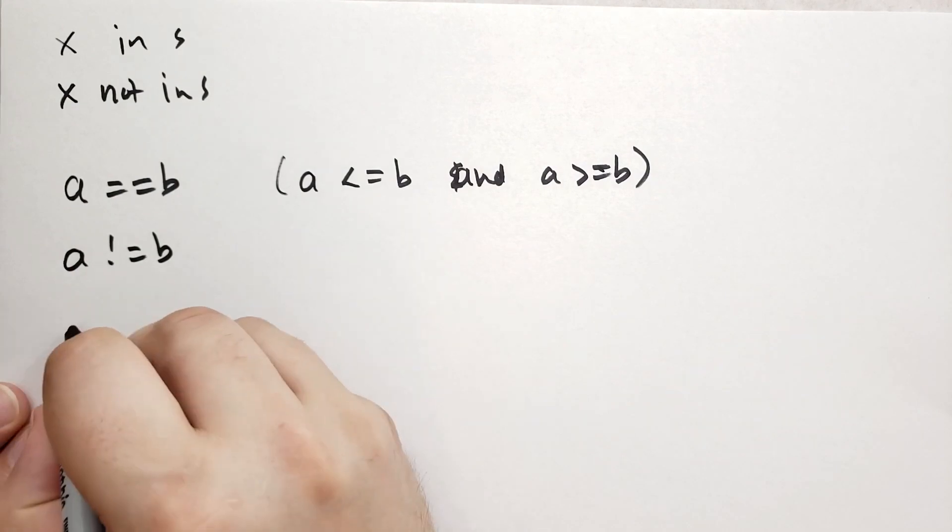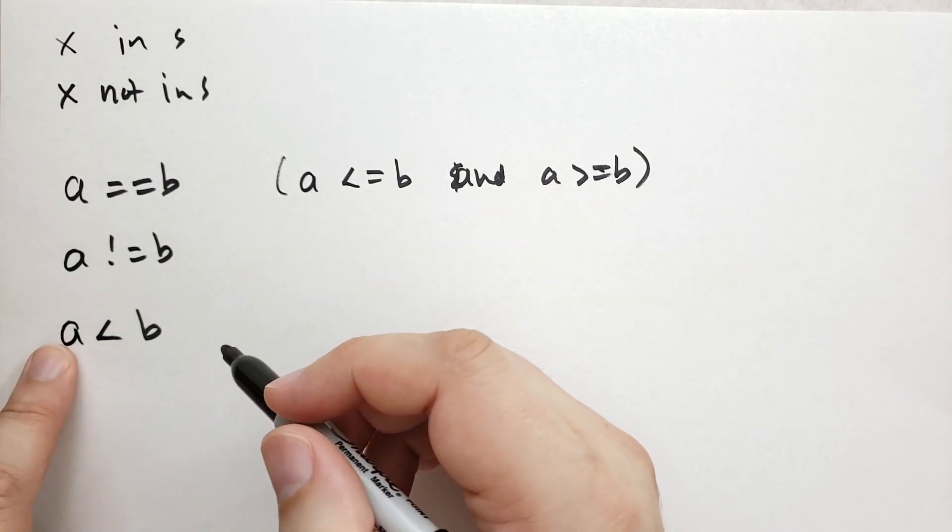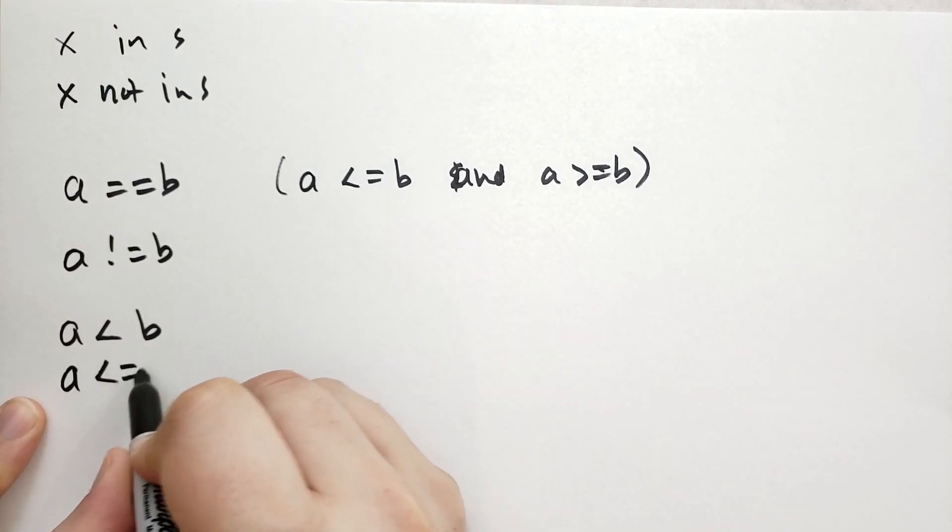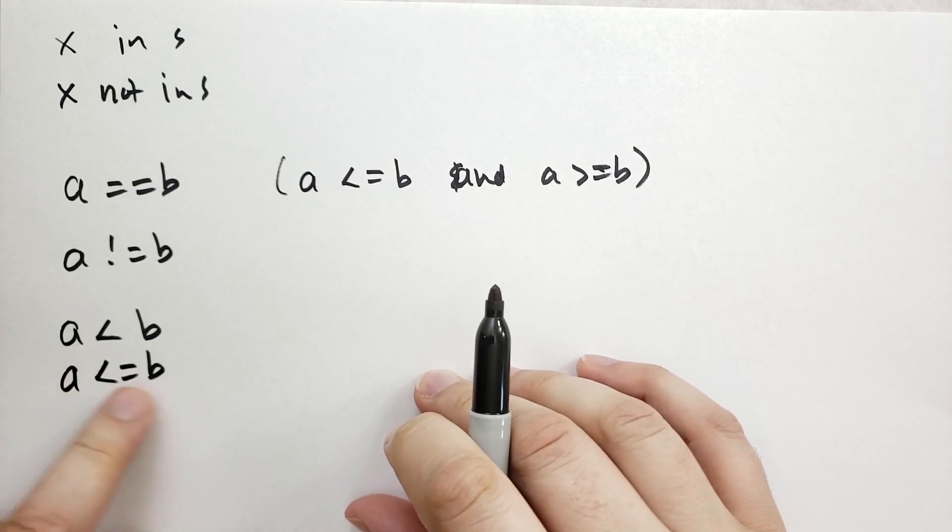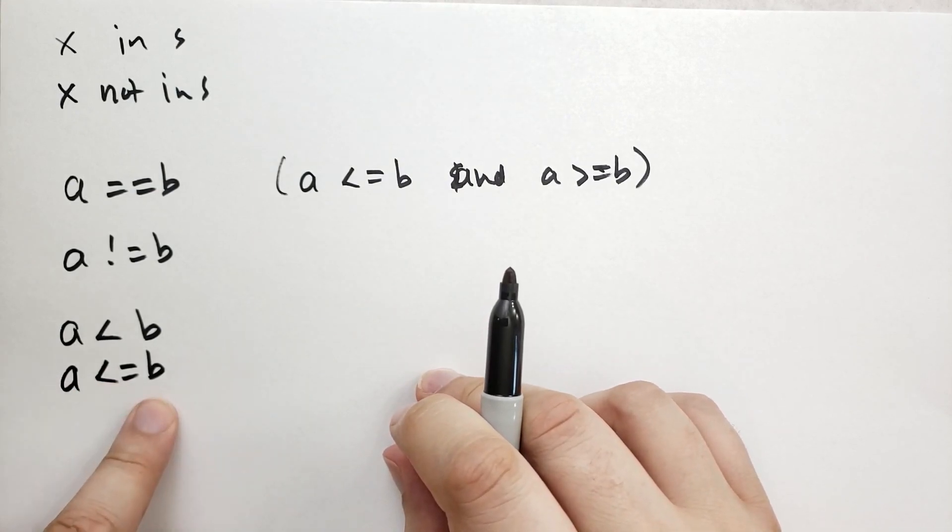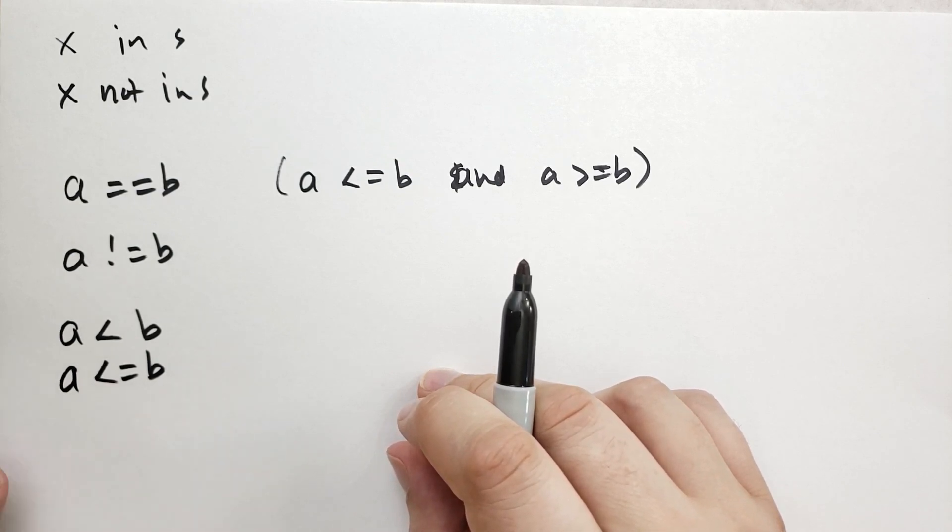And you have of course comparators in sets. So this is the strictly subset where all the elements are found in b but b has additional elements. Then we have a is not equal to b, which a is less than or equal to b, which means that a's elements are all found in b and b may have the same elements as a but may have more as well.